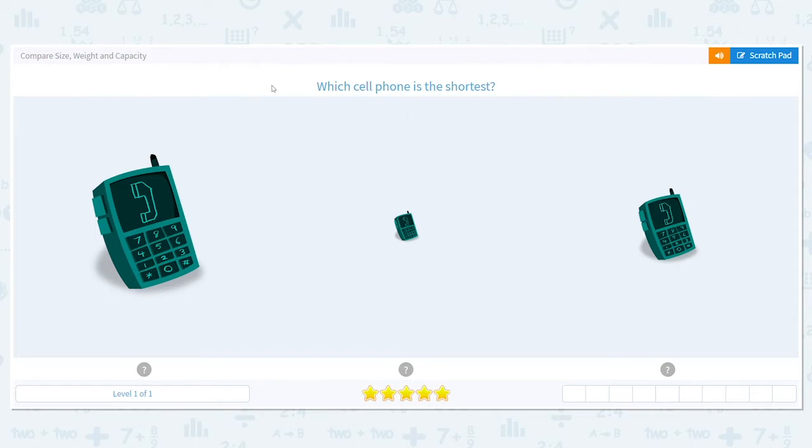Mama Bear is in the middle, and Baby Bear is the smallest. So, if I'm looking for the cell phone that is the shortest, I would think of Baby Bear. Baby Bear would use which one of these phones? Would he use the biggest, this one, or that one? He'd use this one. This one is the shortest.